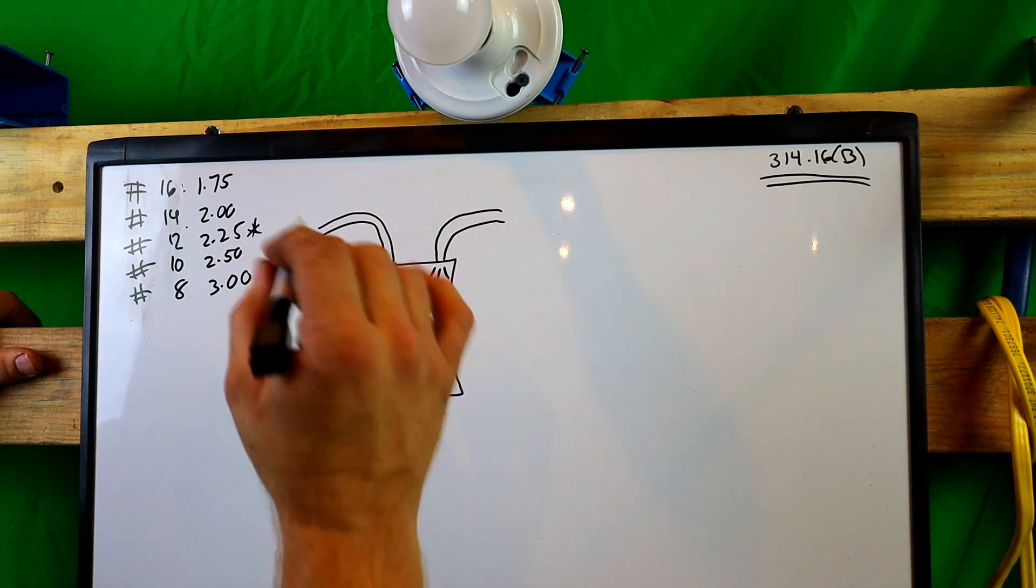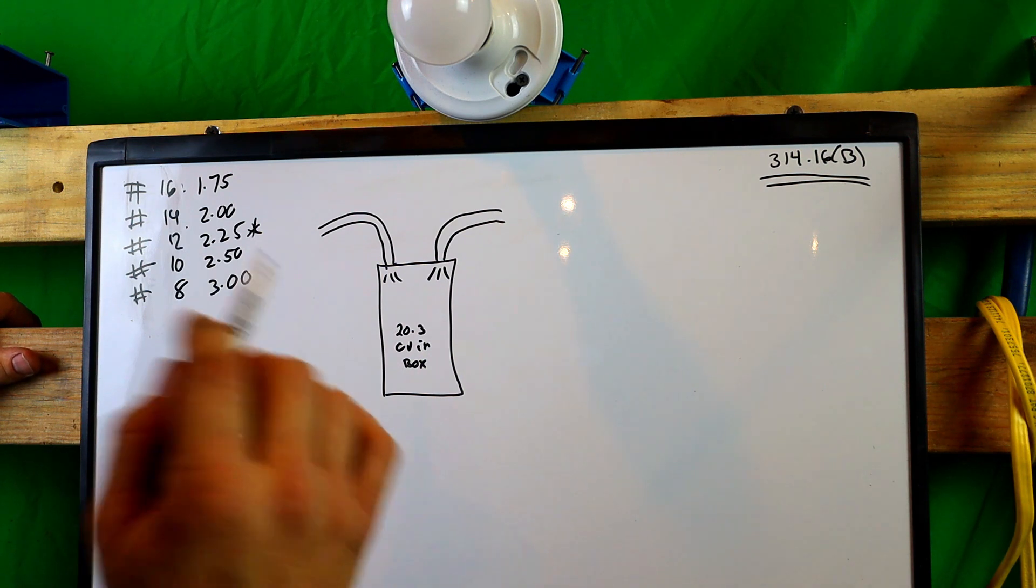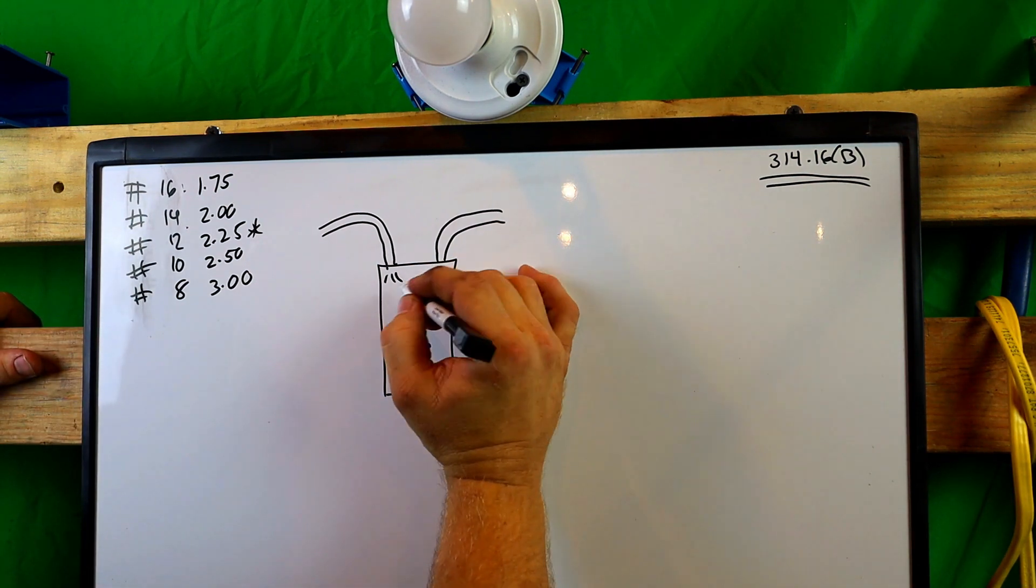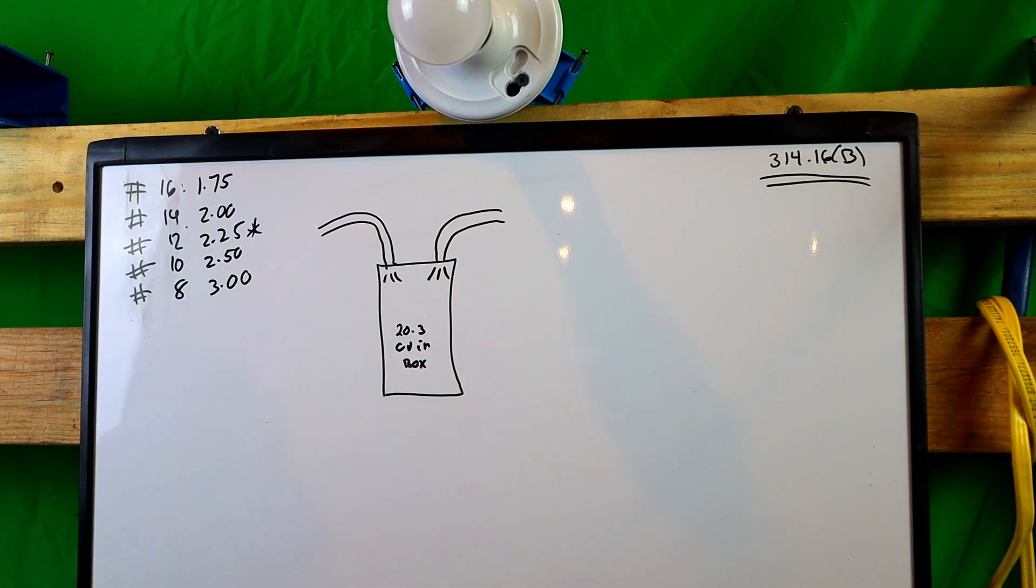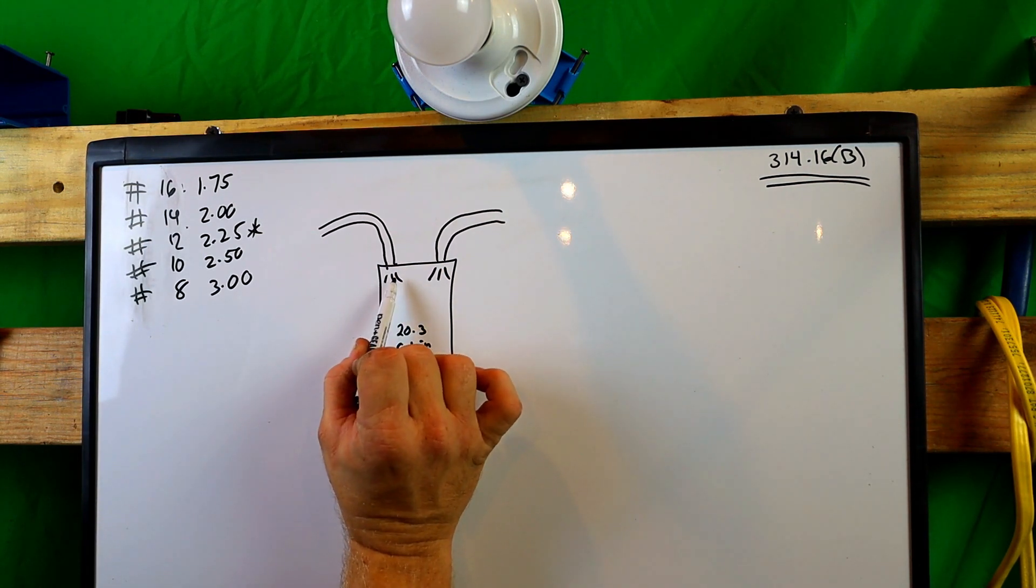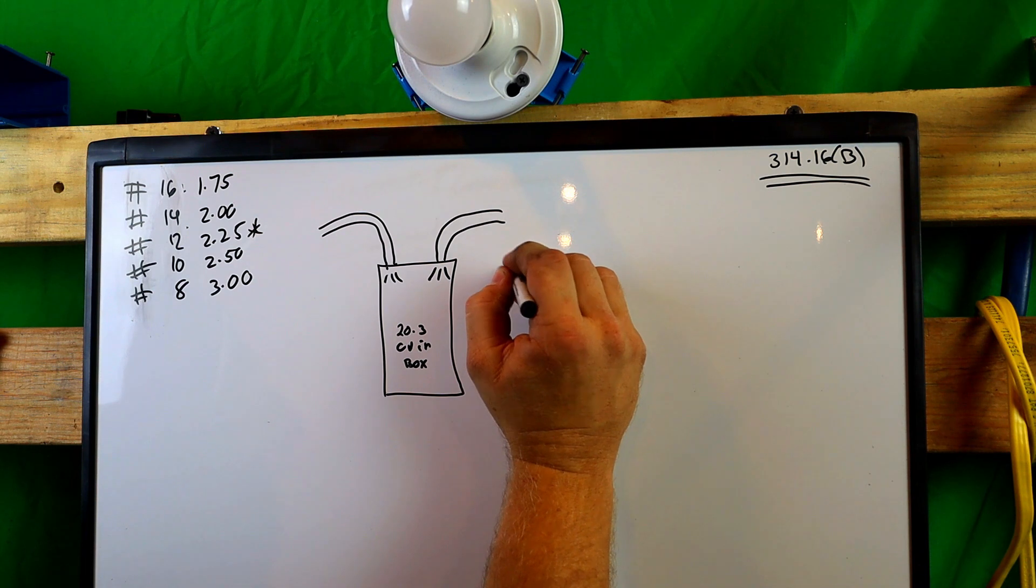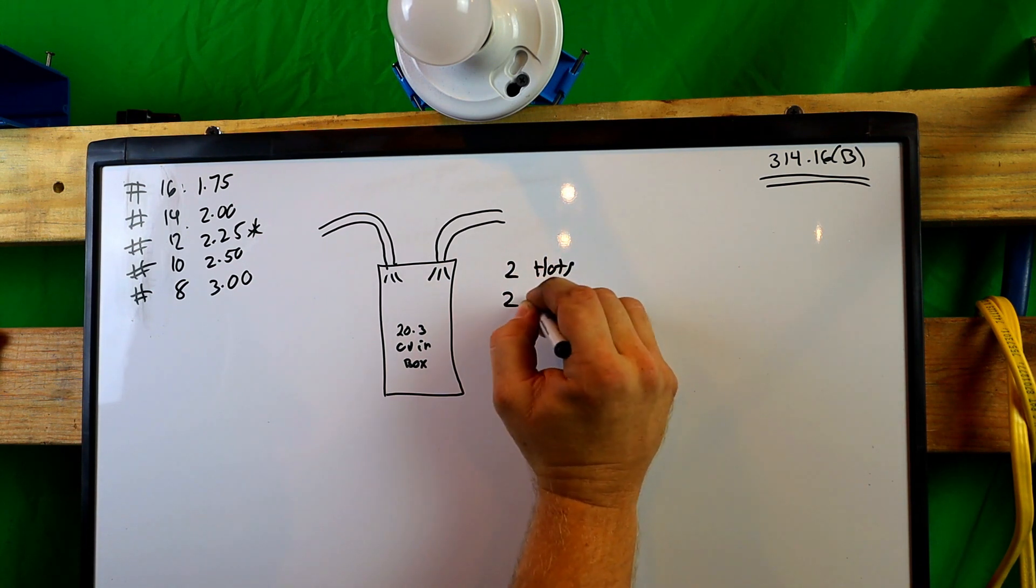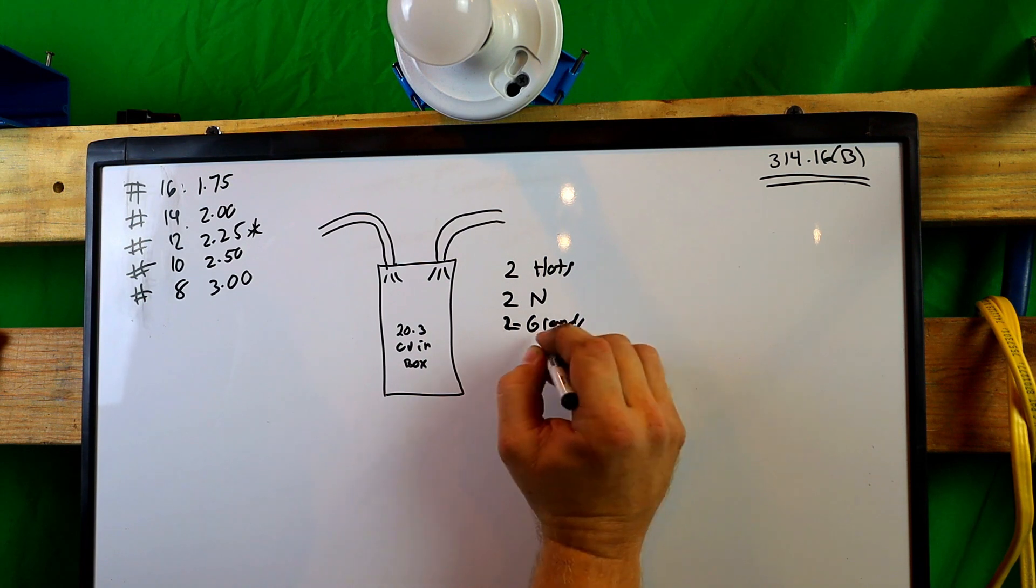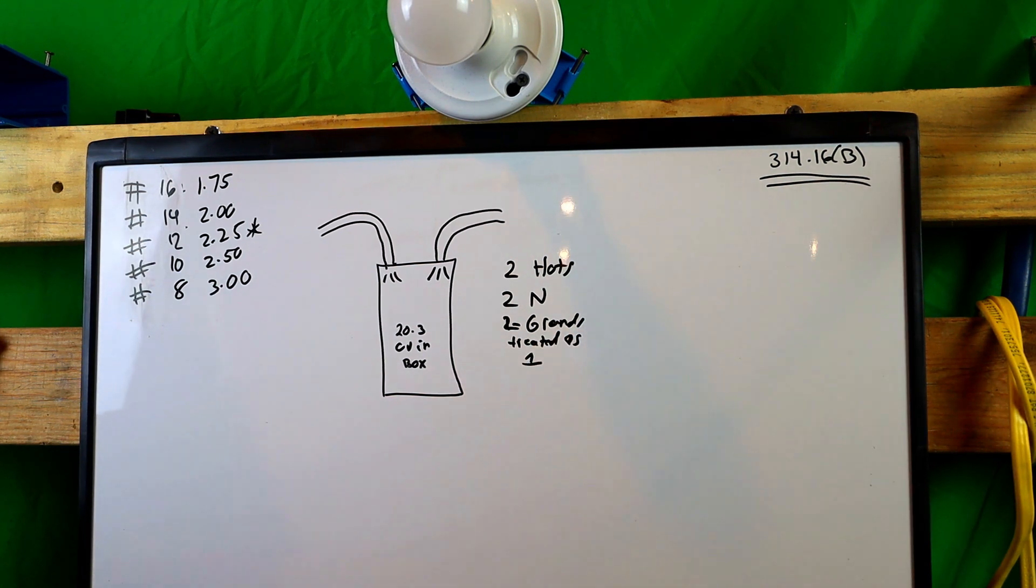So we have three wires in Romex, correct? And we know that the number 12 is rated at 2.25. Now let's stop here and talk about this. There's six wires total, correct? But we are only going to count the ungrounded current carrying conductors, which is your hot and your neutral. The grounds will be counted as a grounded conductor. And these grounds right here, so there's two, will be counted as one wire, even though there's two.